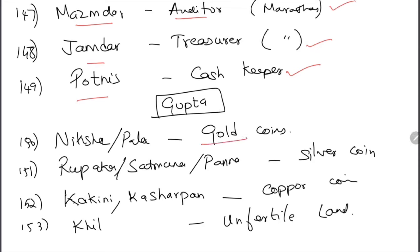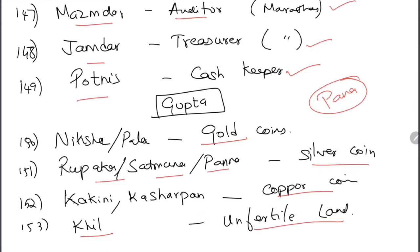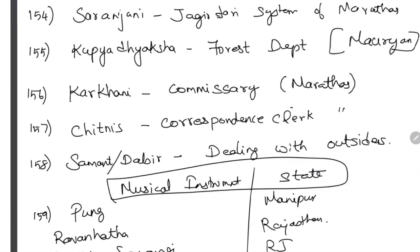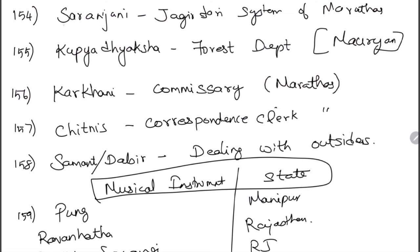Maratha period: Mazumdar were auditors; Jamdar were treasurers; Putnis were cash keepers. Gupta coins: Nishka or Pala were gold coins; Rupaka, Shatmana, or Pana were silver coins; Kakini or Kasharpana were copper coins. Kila means unfertile land — used in the Gupta period. Saranjani was the jagirdari system of the Marathas. Kupya-adhyaksha were forest department during the Mauryan period.